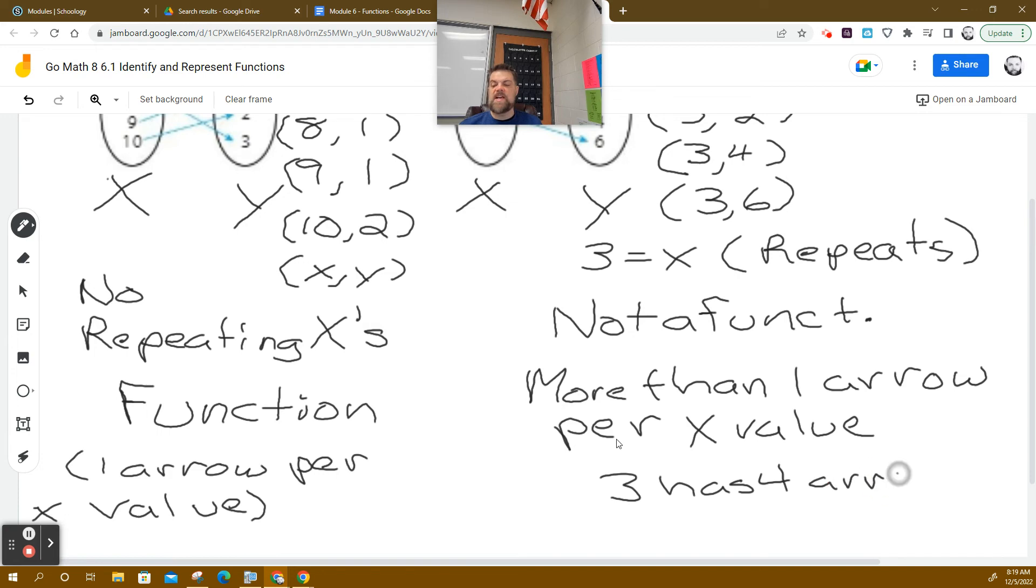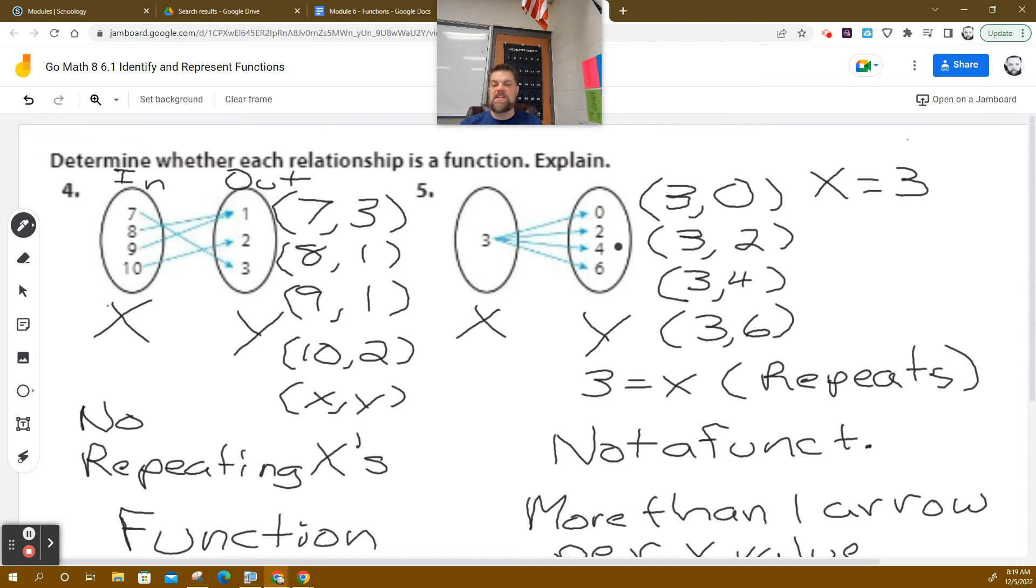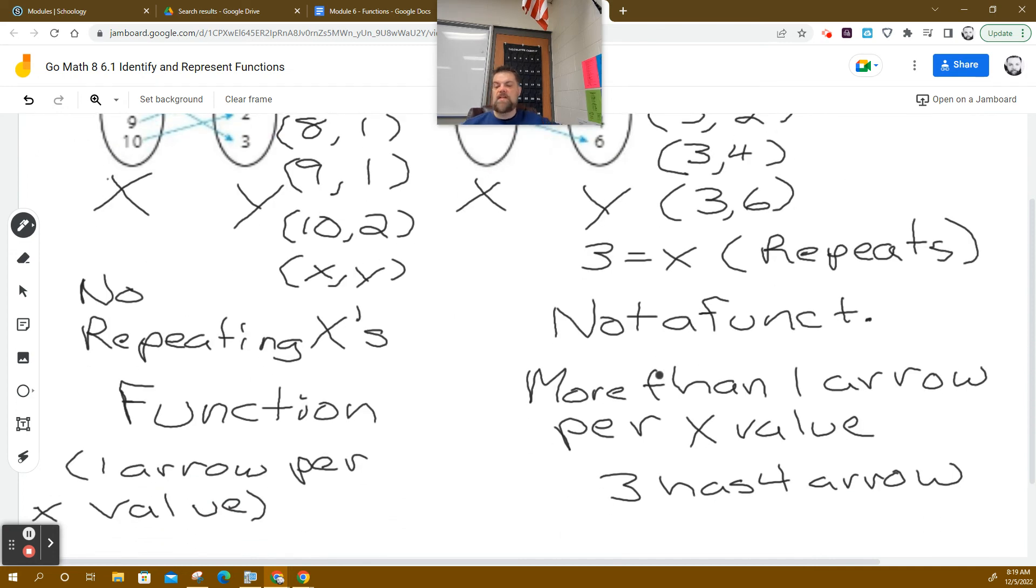So three has four arrows. Now, I'm saying arrow because that's what you're going to call it, but really it's a mapping. It's a mapping from the input value to the output value. Does that help?